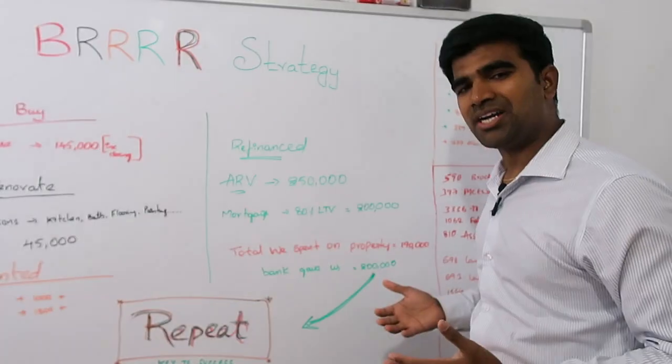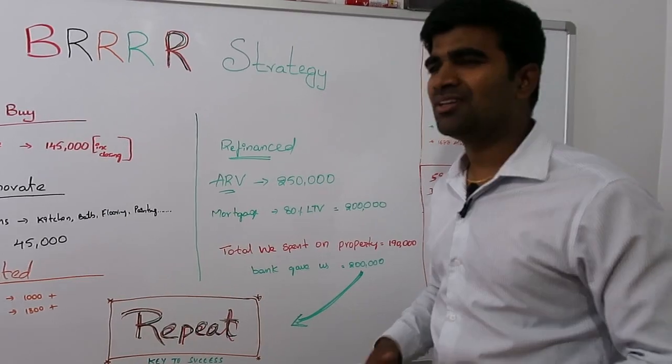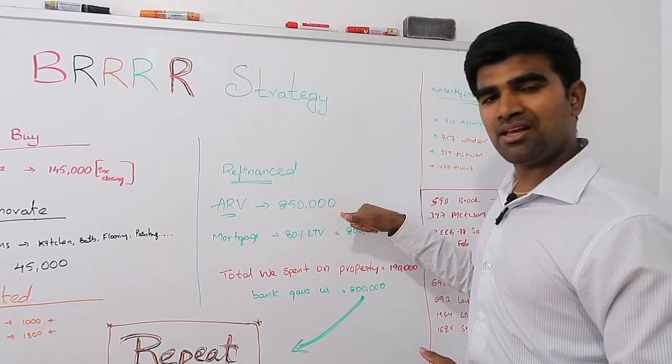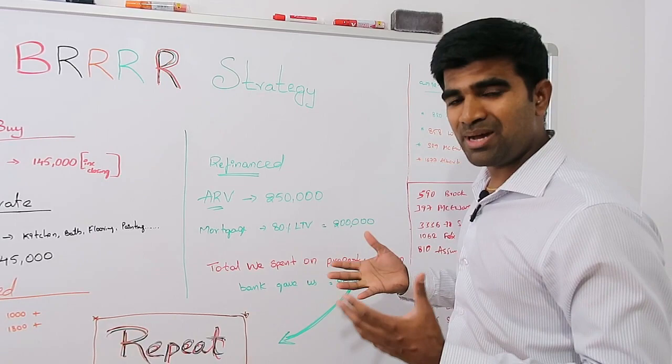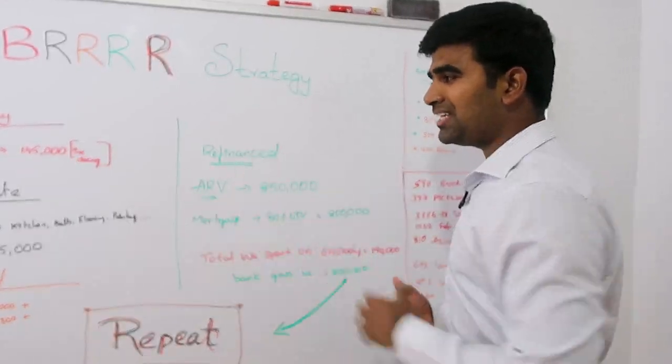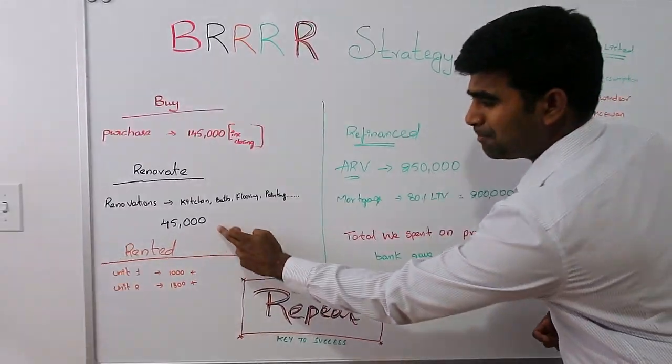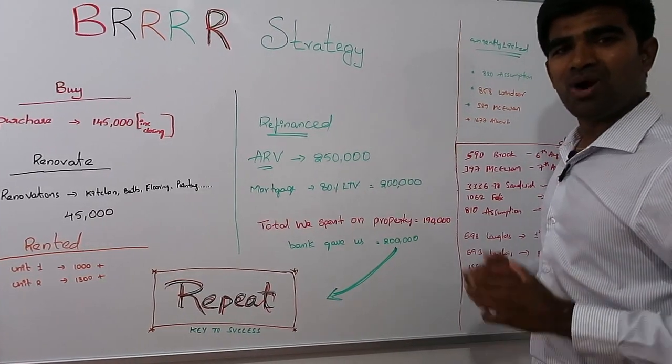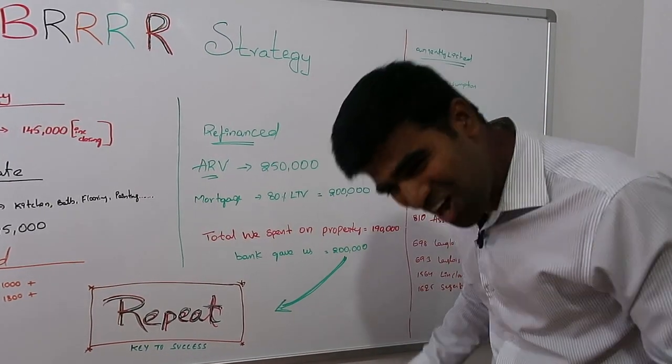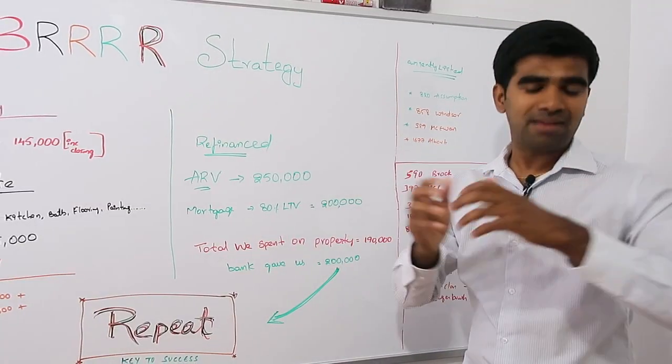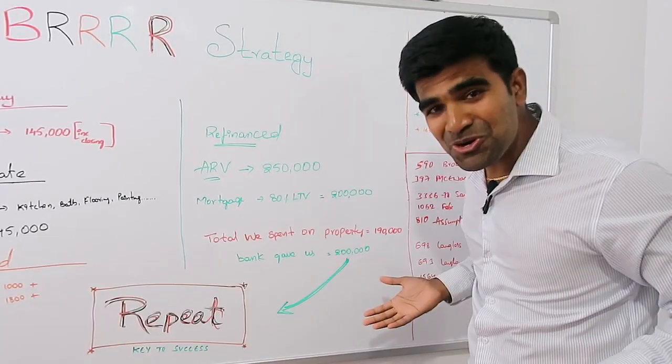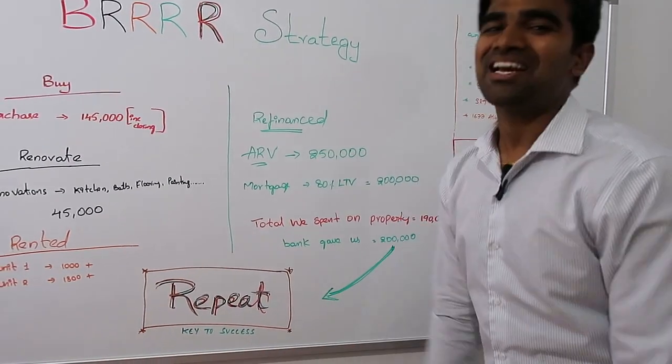They sent the appraiser out. The appraiser came in, looked at the whole property, and said your property is valued at $250,000. That's what after repair value - we have repaired the property, that's why they call it after repair value. The property came at $250,000. Of course the bank doesn't give me 100%. They only lend me 80% of the loan value. What was my loan value? Value is $250,000. What's 80% of $250,000? Which is $200,000. How much did I invest into the property? $145,000 plus $45,000, which is $190,000. How much I got from the bank? $200,000. Which means I got all my money back - I mean my investor's money - plus an extra $10,000.